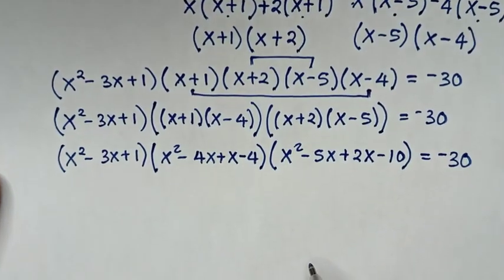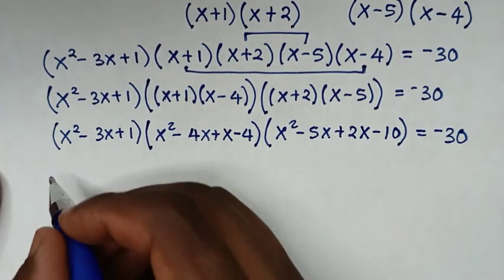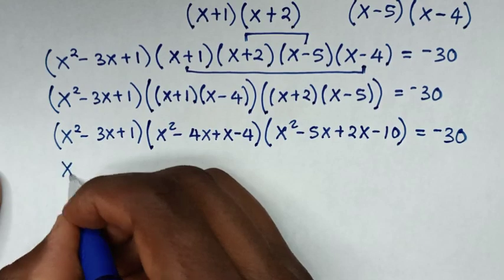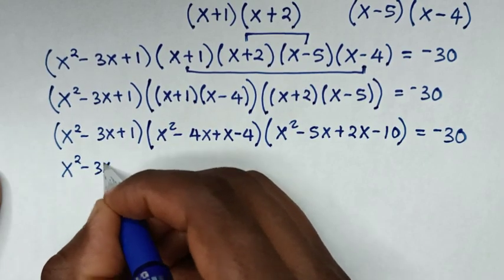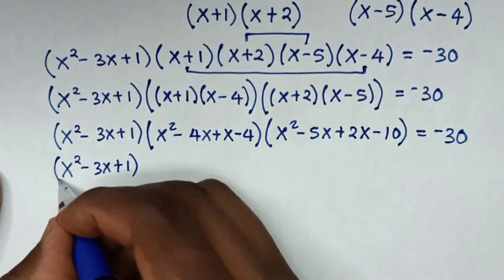In the next step, we have (x²-3x+1)(x²-3x-4)(x²-3x-10) = -30.